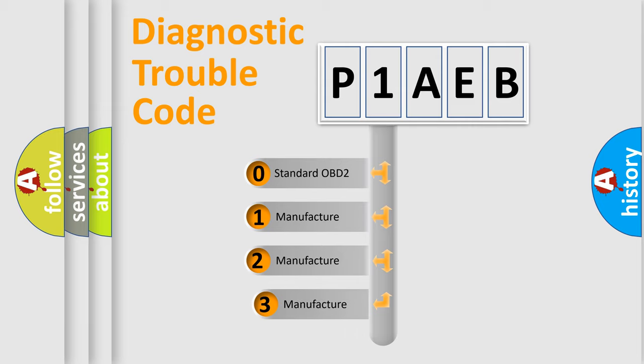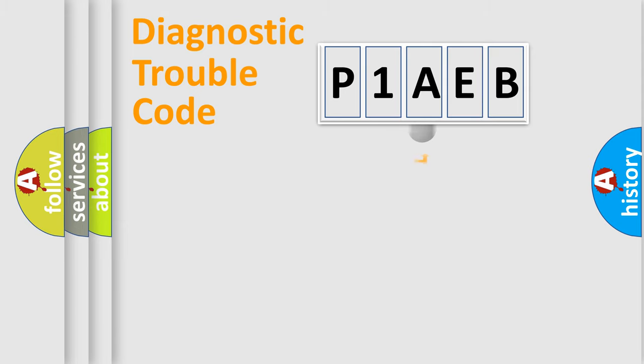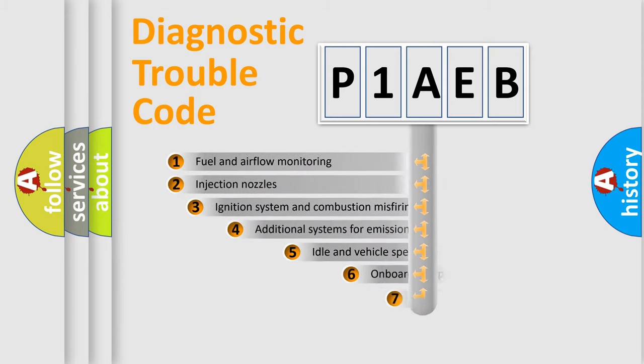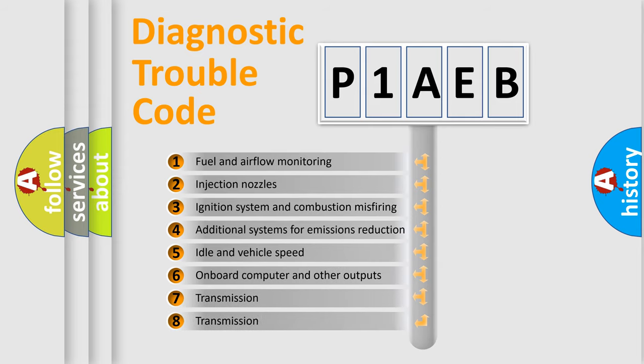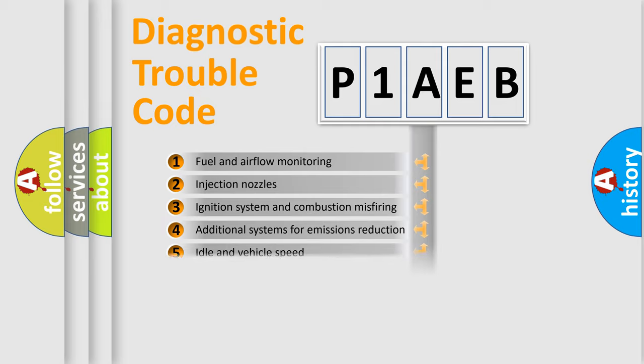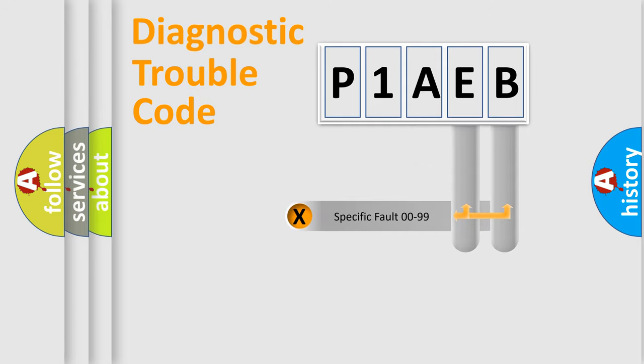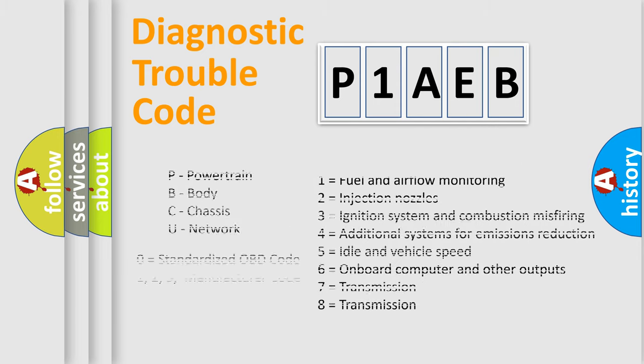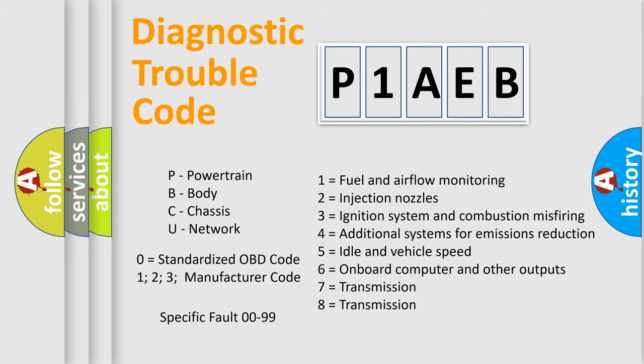If the second character is expressed as zero, it is a standardized error. In the case of numbers 1, 2, 3, it is a more precise expression of the car specific error. The third character specifies a subset of errors. The distribution shown is valid only for the standardized DTC code. Only the last two characters define the specific fault of the group. Let's not forget that such a division is valid only if the other character code is expressed by the number zero.